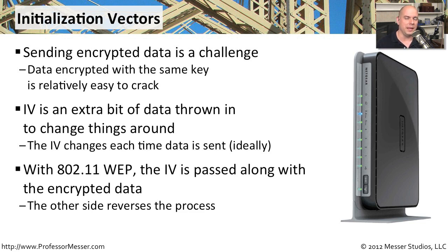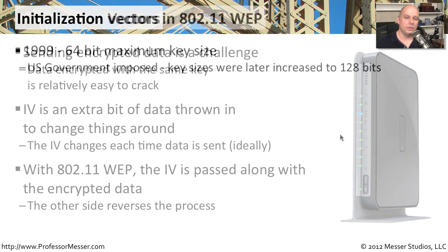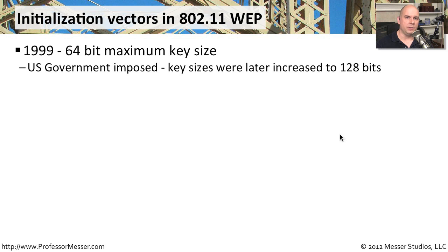Well, that was a bit of a problem — it created some challenges. One of the issues with 802.11 WEP was that the key strength was not very big. The key itself was limited to a 64-bit size. Once you put in all the information you had for the key, it could not exceed 64 bits. And that was something that was required by the US government.